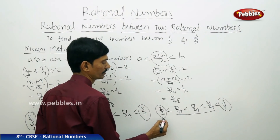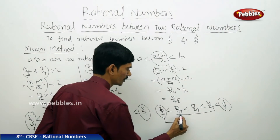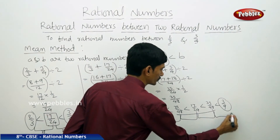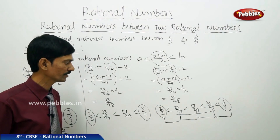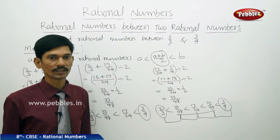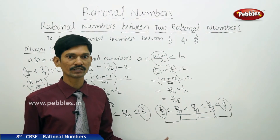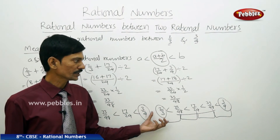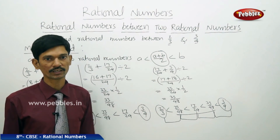Again, we can find the arithmetic mean of each pair of consecutive rational numbers to insert more rational numbers. In this way, by finding the arithmetic mean of each two consecutive rational numbers, we can insert an unlimited number of rational numbers between any two given rational numbers.